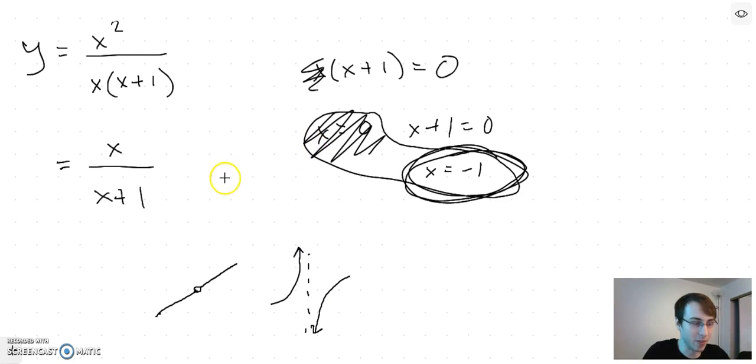But for now just remember that before you find the vertical asymptotes you should always simplify the function first and try to cancel out anything that you can.